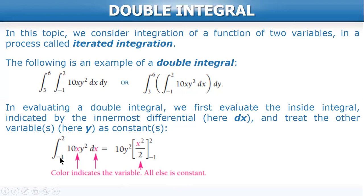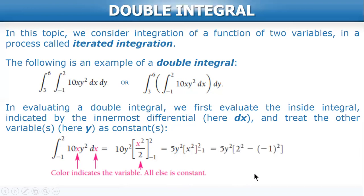We integrate from the lower limit to upper limit, then evaluate by substituting the upper and lower limits. So 10 over 2 gives us 5y². After simplification, we have 15y². This is the result after evaluating the inside integral.